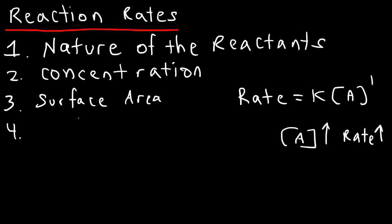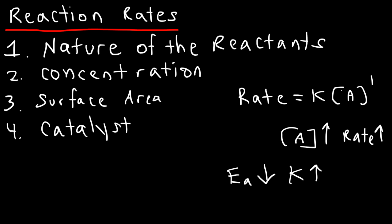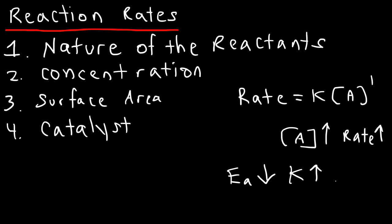The fourth area is adding a catalyst. Whenever you add a catalyst to the reaction, it lowers the activation energy, and by lowering the activation energy you can increase the rate constant k. And k affects the rate of the reaction, so when k goes up, the rate of the reaction goes up. A catalyst lowers the activation energy by giving the system an alternative pathway.